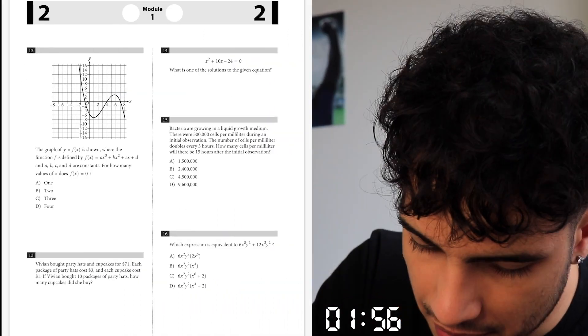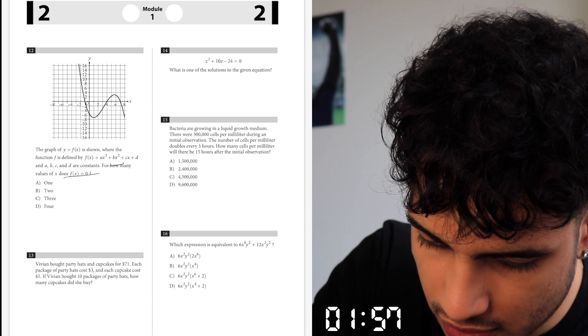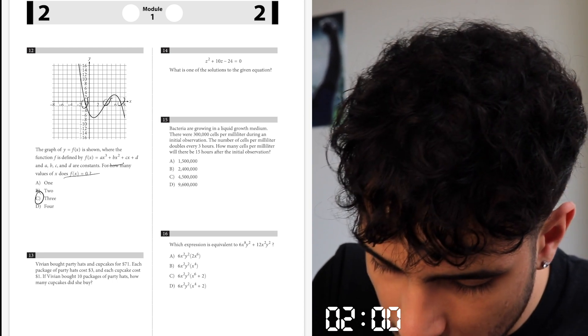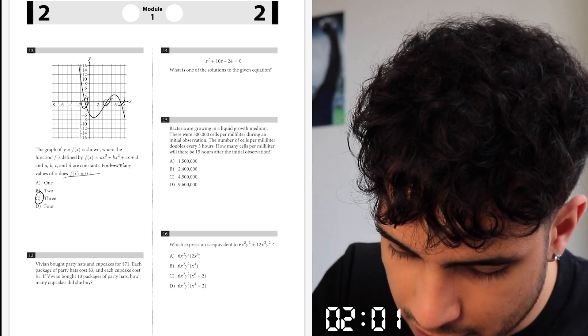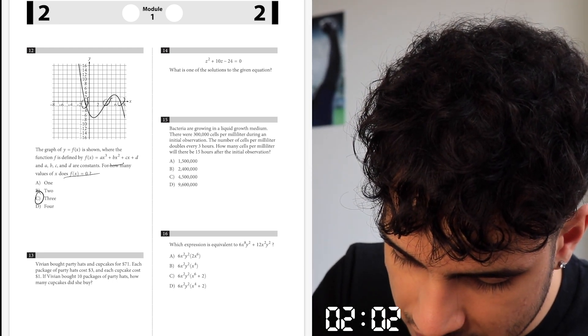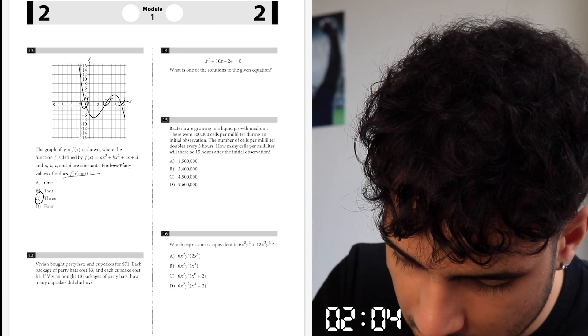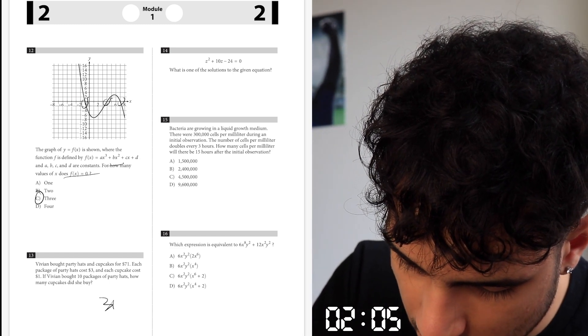Number 12. How many — I think it's 0, 1, 2, 3. Cost for each package: party hats is $3, each cupcake costs $1. 10 packages of party hats, so that's $30. Party hats total is $41.